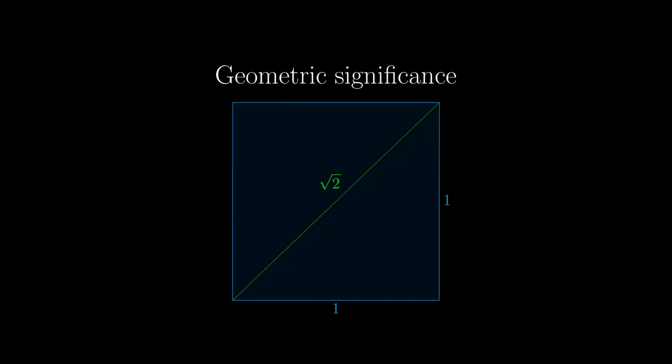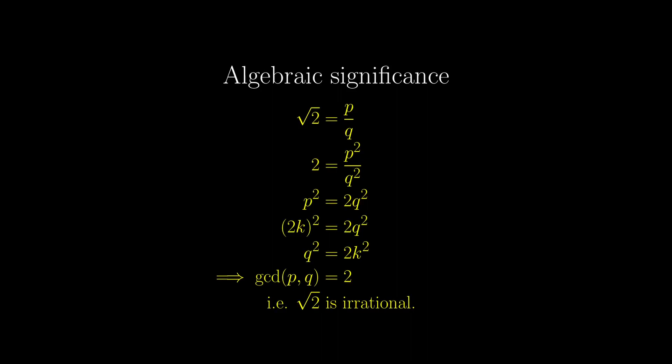Square root of 2 has geometric significance as a result of Pythagorean theorem, and algebraic significance as it is one of the first numbers proved to be irrational.